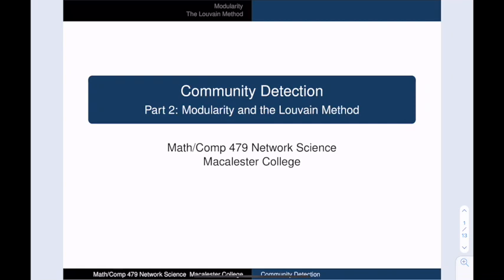This is our second video on community detection in networks. We will talk about a quantity called modularity, which measures the quality of a given split. Then we will present the Louvain method, an approximation algorithm that tries to find a graph partition with a high modularity score.